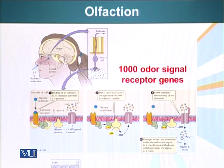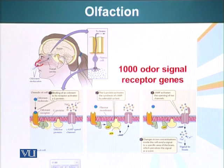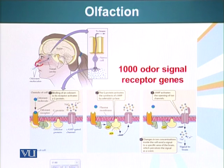We have neurons that terminate in our nose. The tips of these neurons have special receptors — mice have about a thousand different receptors for specific odor molecules. When an odor molecule binds these G protein coupled receptors, the receptor undergoes a conformational change, as we have seen before.